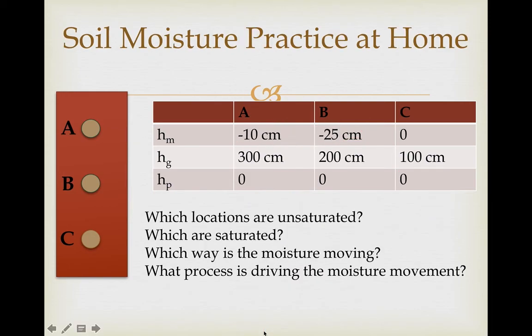I want to leave you with a different set of data — same cartoon, but the numbers in the table have changed — and I want you to be able to answer questions about which locations are unsaturated, which are saturated, which way the moisture is going, and what's driving the moisture movement. Work this out on a sheet of paper, then head to the practice-at-home folder within Blackboard to check your work. I'll see you on Thursday where we'll take these ideas of potential gradients and soil moisture and integrate them to understand the process of infiltration.